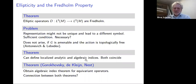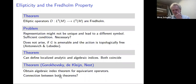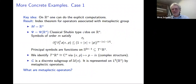In this setting you can define localized analytic and algebraic indices and show they coincide. There's similar work by Gorokhovsky, de Kleijn, and Nest, who obtained an algebraic index theorem for equivariant operators — a very similar situation but the connection between both theorems isn't completely clear yet. We decided to look at concrete examples, and the probably easiest case is R^n, where you can do explicit computations. Our first result is an index theorem for operators associated with the metaplectic group.